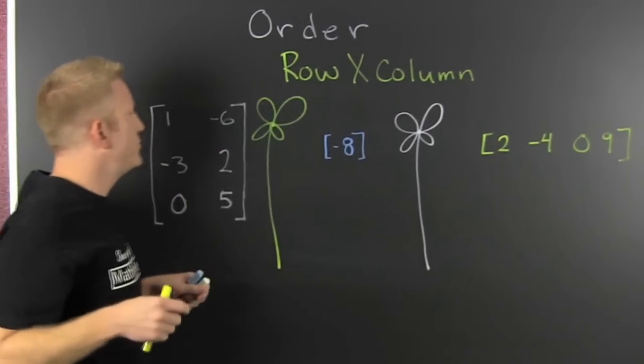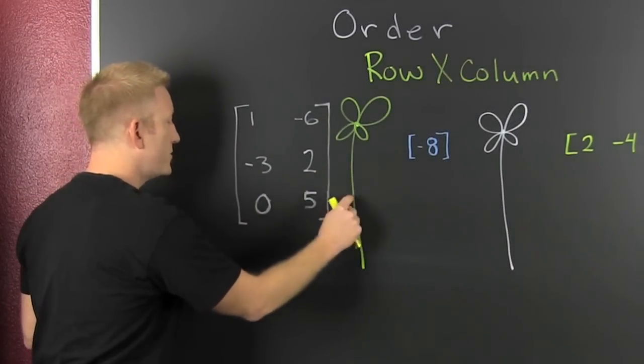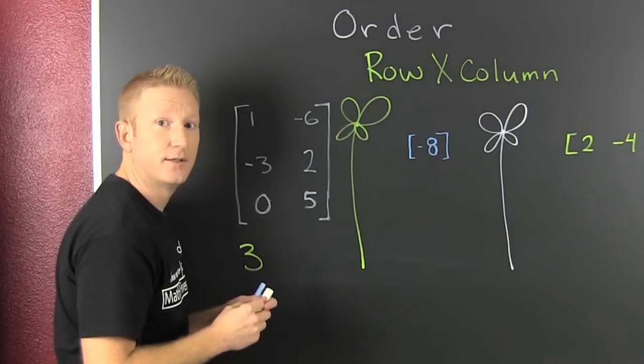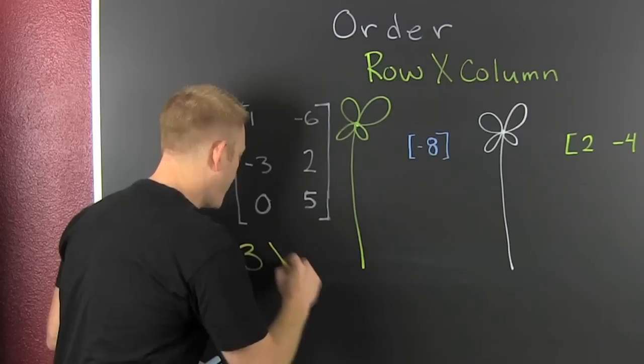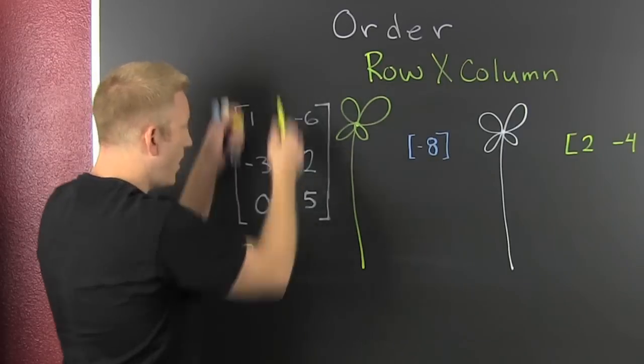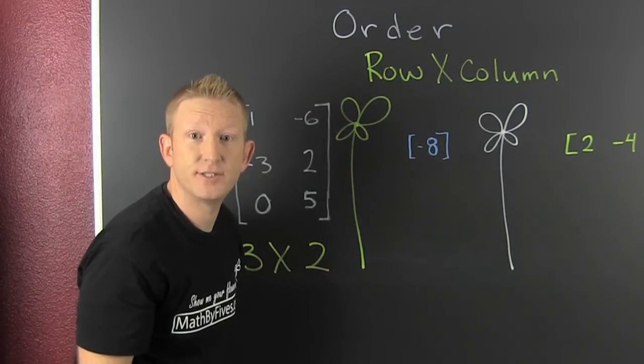How many rows do we have? I have one row, two rows, three rows. So we write three. Three by what? Three by how many columns? There are one, two columns. So this is a three by two matrices.